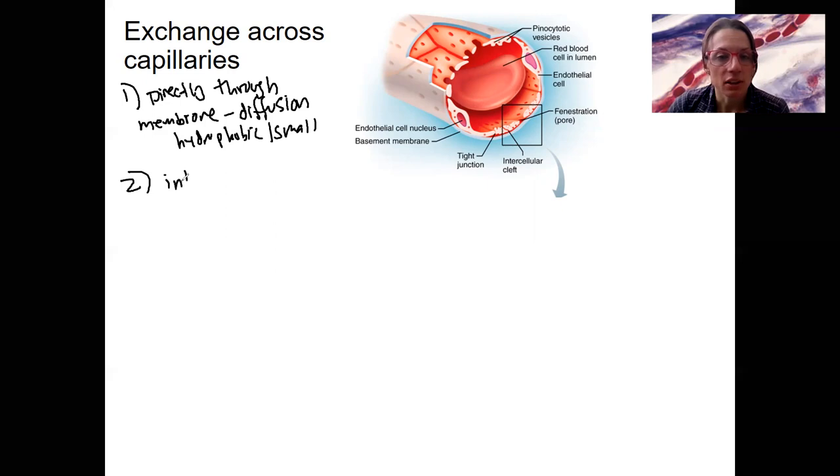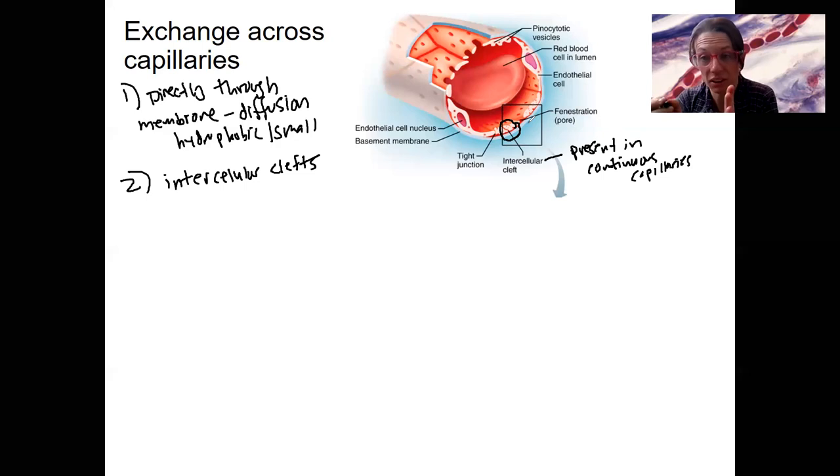Two, we can go through these intercellular clefts. That's right here. These are the small spaces in between adjacent cells, even in continuous capillaries. So there's some variability there. These are present even in continuous capillaries. They're smaller than pores. They're not actually like pores, they're just clefts. A cleft is like a space, close to a hole. So they're a little smaller than pores.